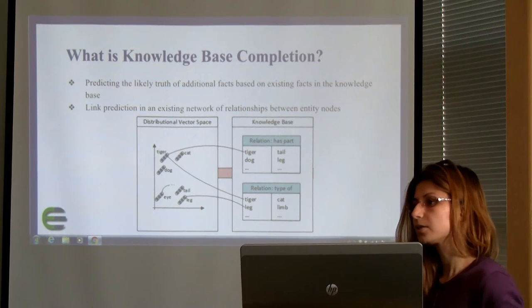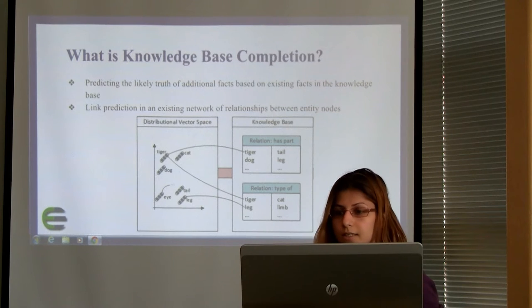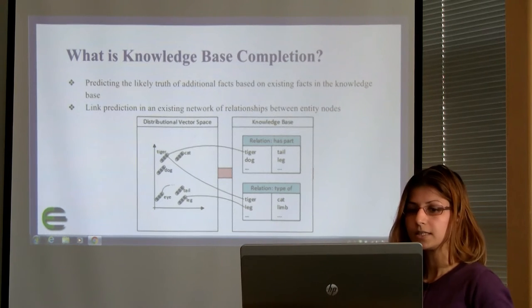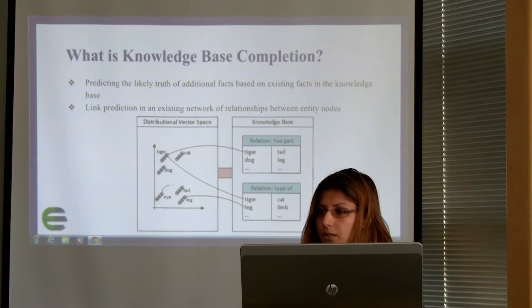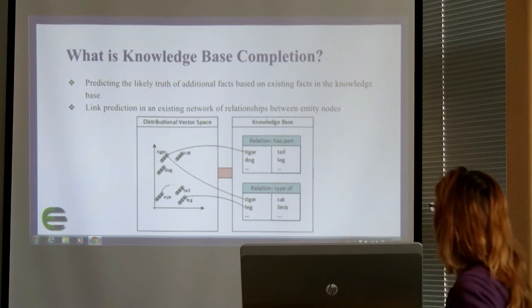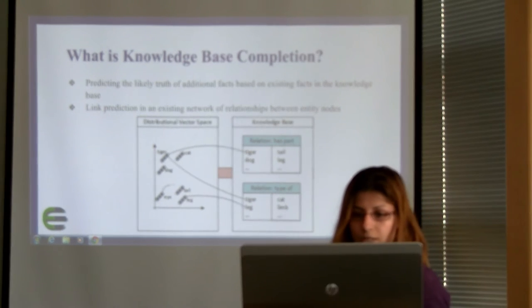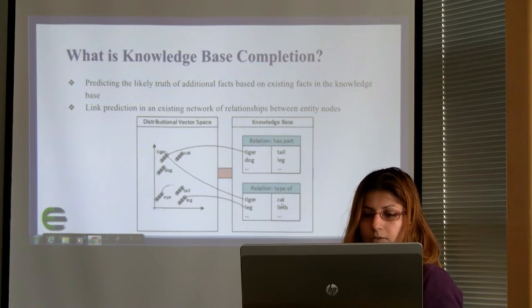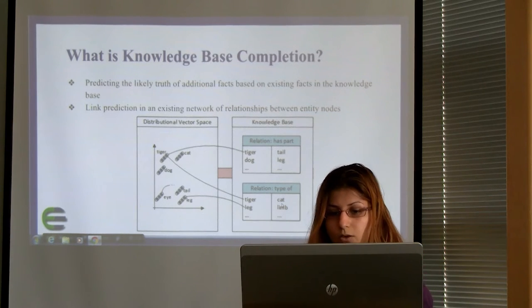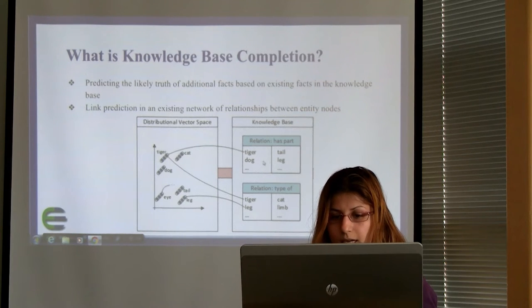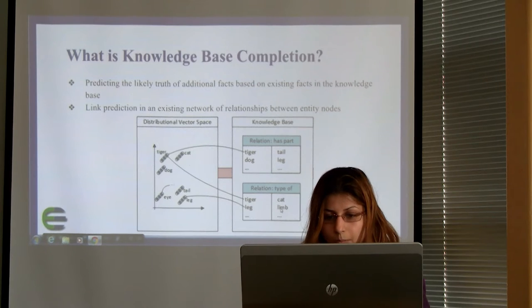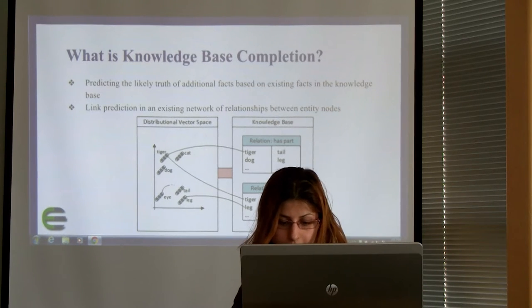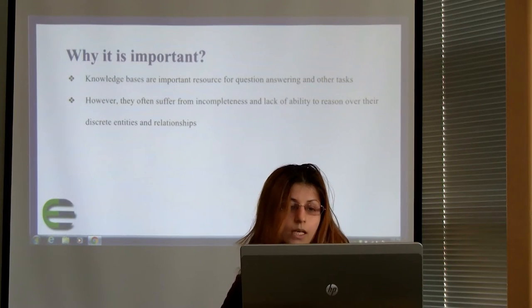First of all, what is Knowledge-Based Completion? Knowledge-Based Completion or Link-Prediction is inferring new true facts using the existing knowledge and facts that we have in our Knowledge-Base. For example, here in this picture, we know from the Knowledge-Base that the tiger has tail and we also know that tiger is type of cat. But we don't know whether cat has also tail or not. Similarly, we know that dog has leg and leg is type of limb. But we don't have this fact in our Knowledge-Base that dog has limb. Those kind of relations and links.